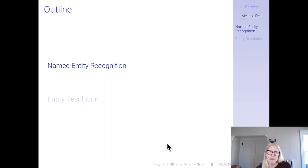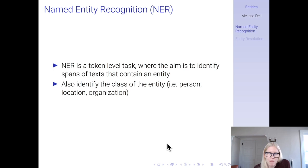I'm going to start by talking about named entity recognition, or NER. NER is a token-level task where the aim is to identify spans of text that contain an entity, and also to identify the class of the entity — for example, a person, a location, or an organization.